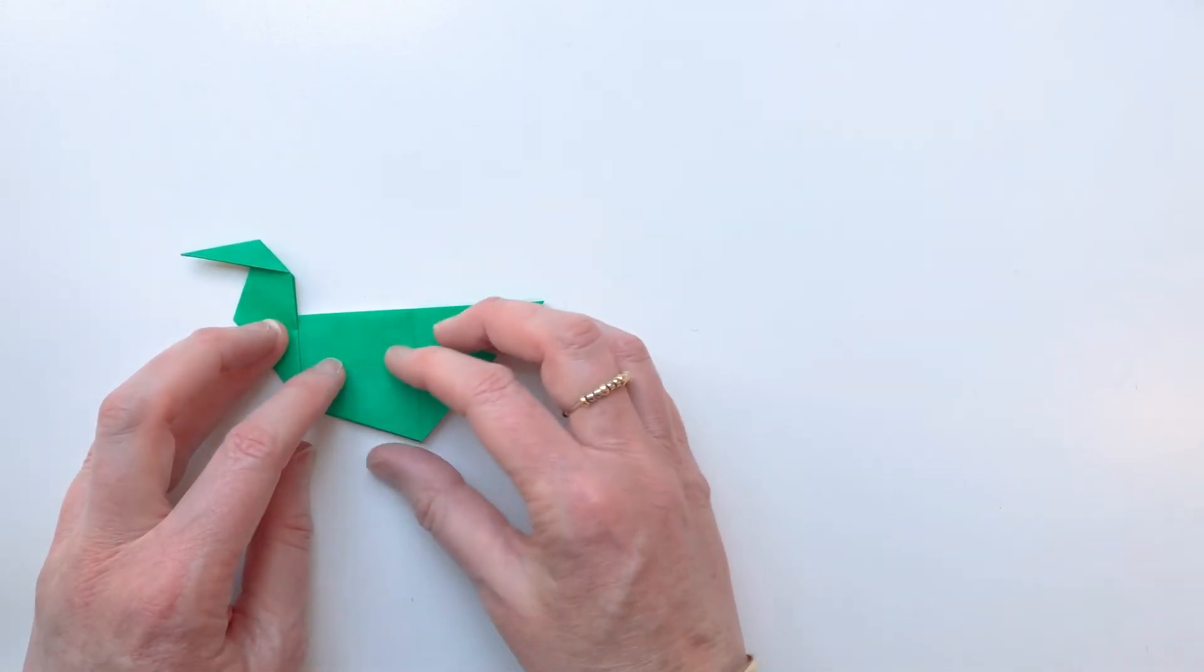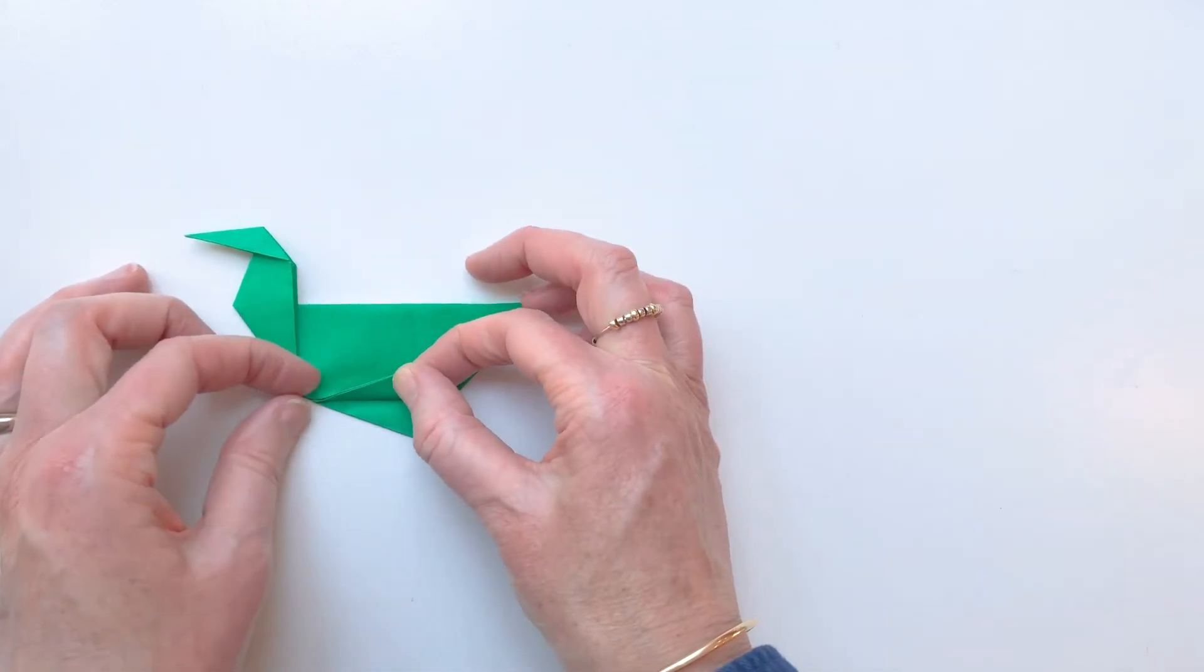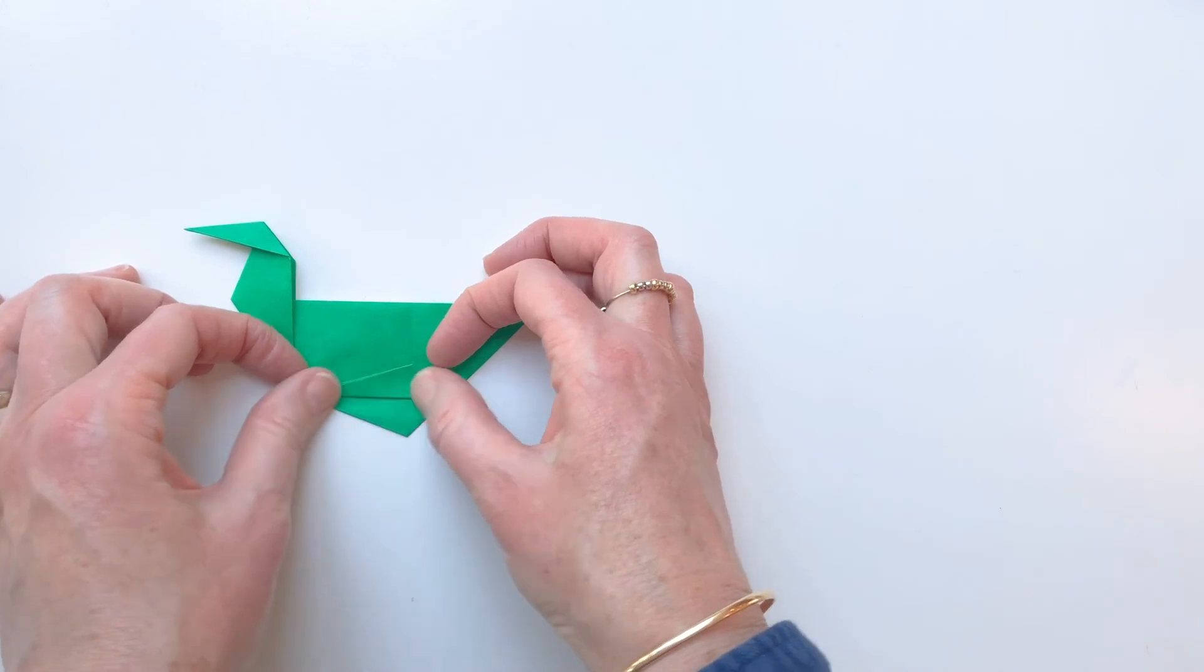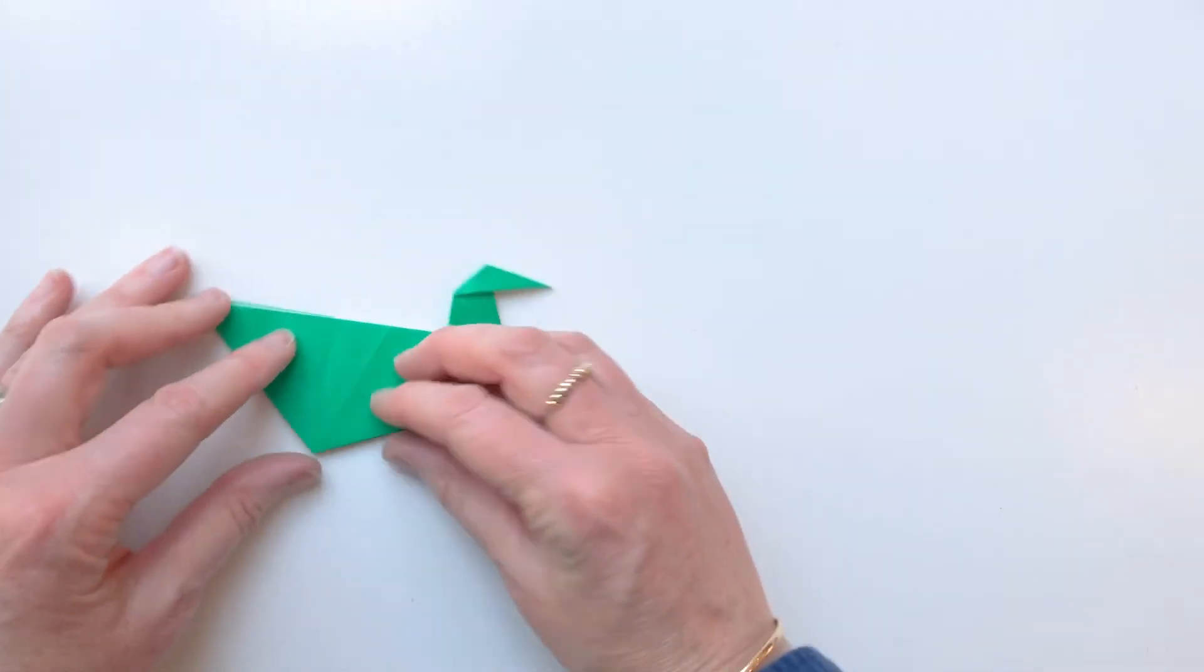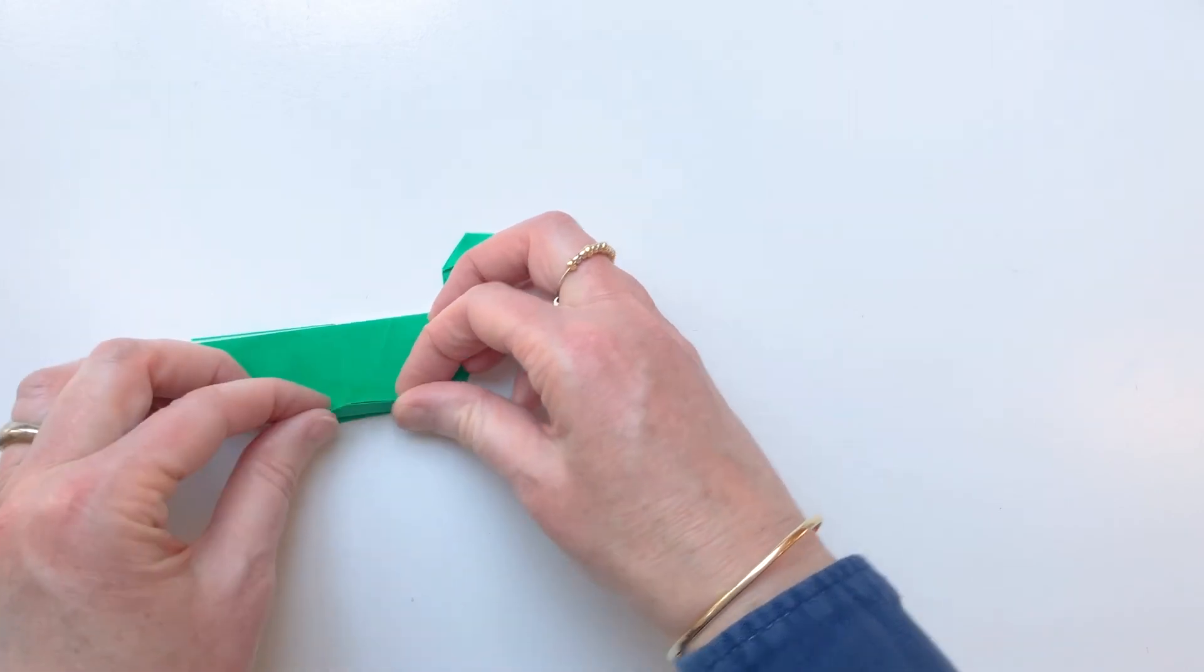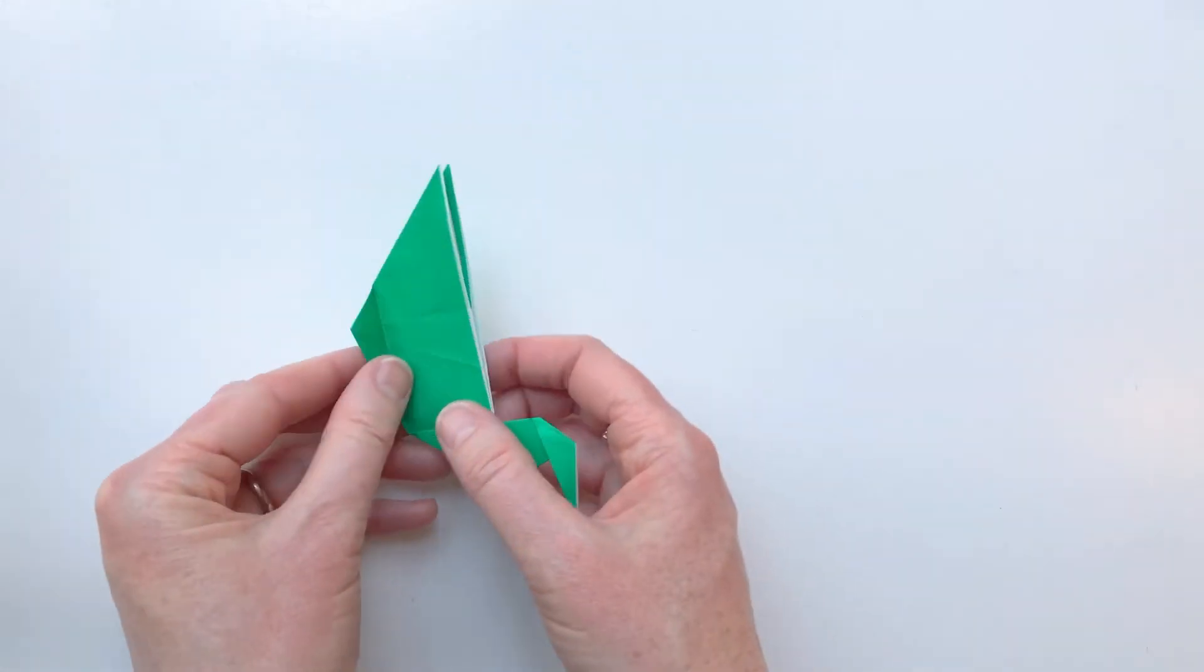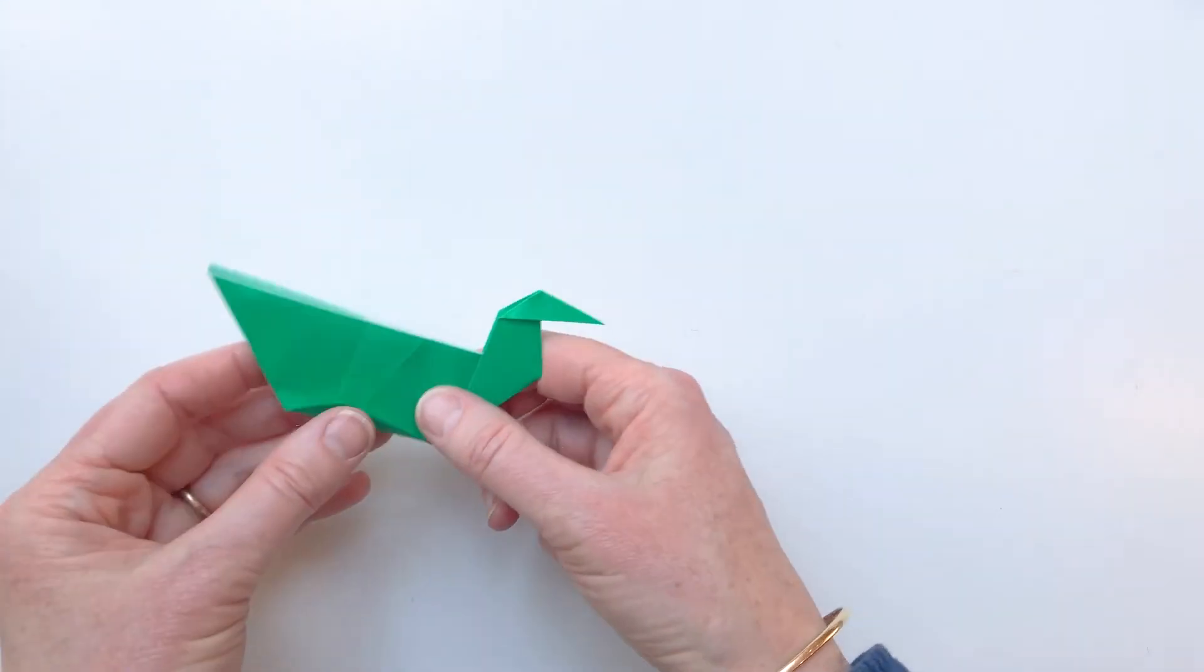And to make the little bird basket a little bit more stable, we're going to just turn up the bottom edges. Sort of make a platform really. So that's one side and then turn it over. And do it again on that side. So that gives it something to rest on. You can see from above.